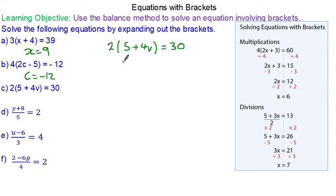For question C. Again 2 is a factor of 30. So we can divide both by 2. So they will cancel. So 5 plus 4v will equal 15. Take away 5 from both sides because that's the opposite of this addition of 5. So 4v will equal 10. And v will equal 2.5 when you divide both sides by 4.